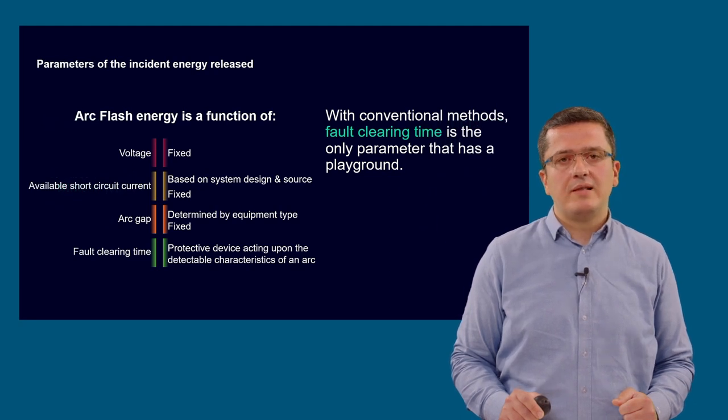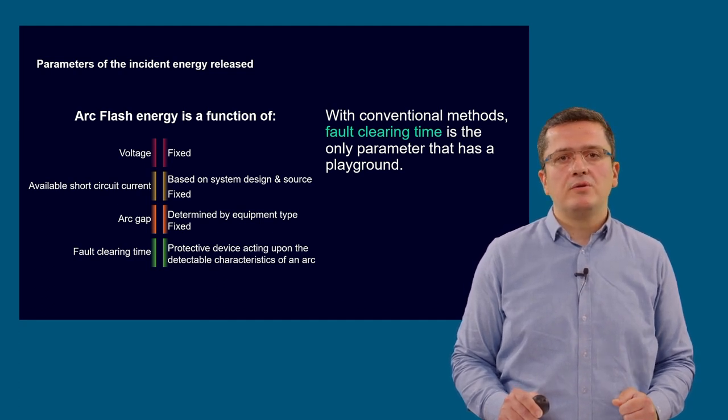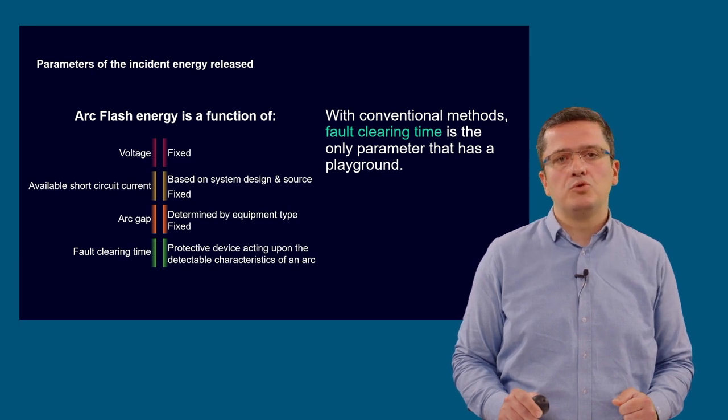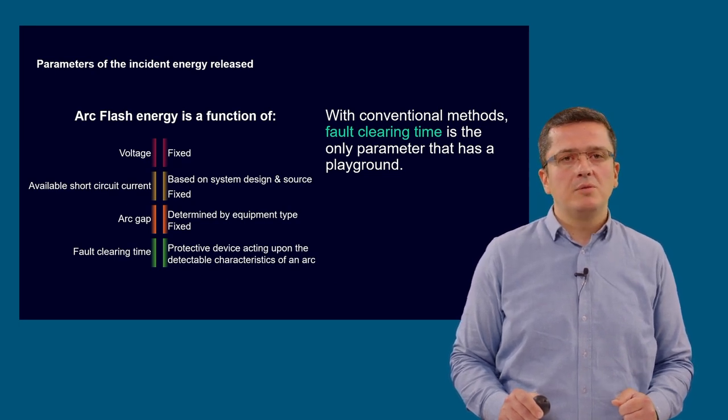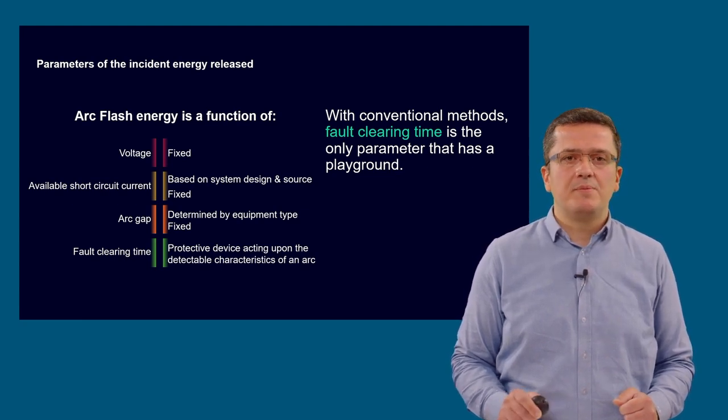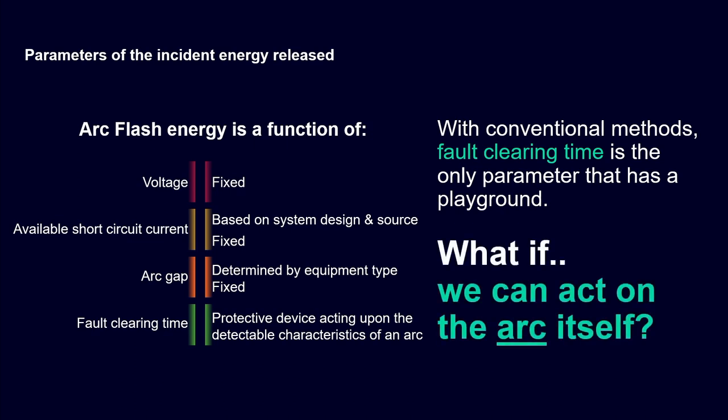Within this dilemma, there are some parameters already fixed without room for adjustment. In regard to limiting the arc flash incident energy, there is also not much room to play. Amongst the parameters, it is the fault clearing time we can act on by utilizing fast tripping circuit breakers and early detection of arc via light or pressure sensors. What if we would have the chance to act directly on the arc itself?